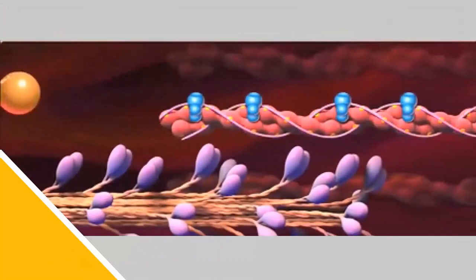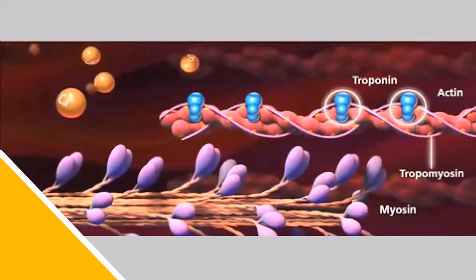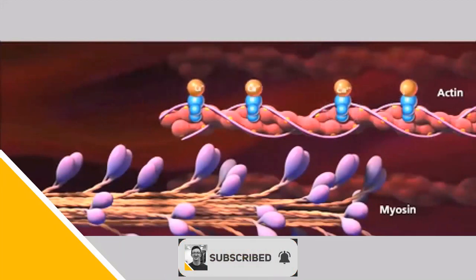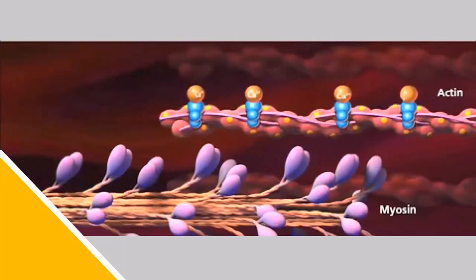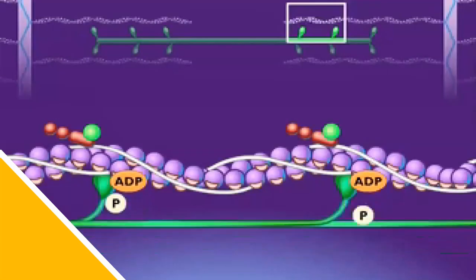When a muscle is stimulated, calcium ions bind to troponin. This moves tropomyosin out of the way and uncovers binding sites for myosin on the actin myofilaments. ADP and phosphate are attached to the myosin head from the previous cycle of movement, but the phosphate is released as the myosin head attaches to the exposed binding site on actin, forming a crossbridge.